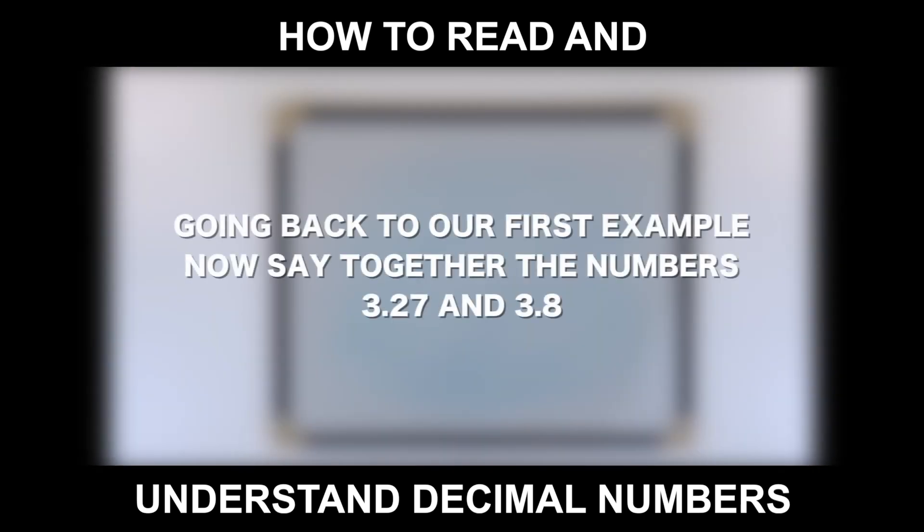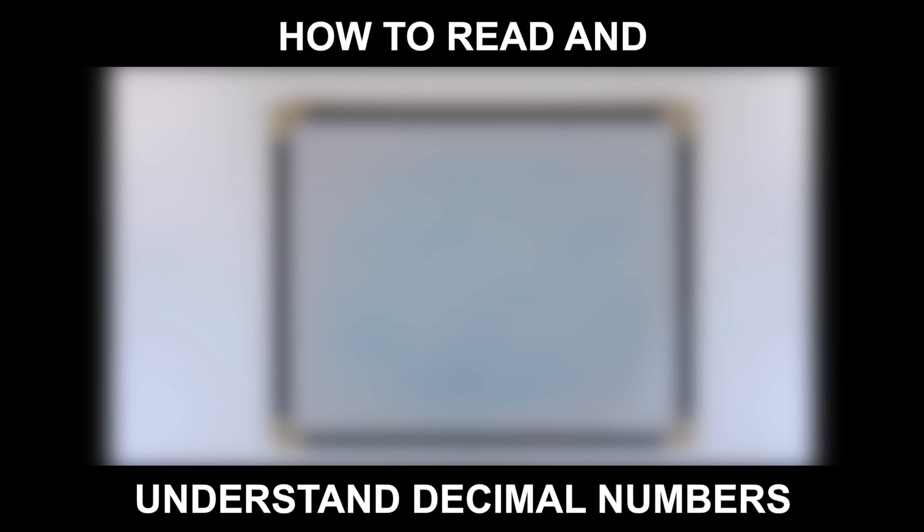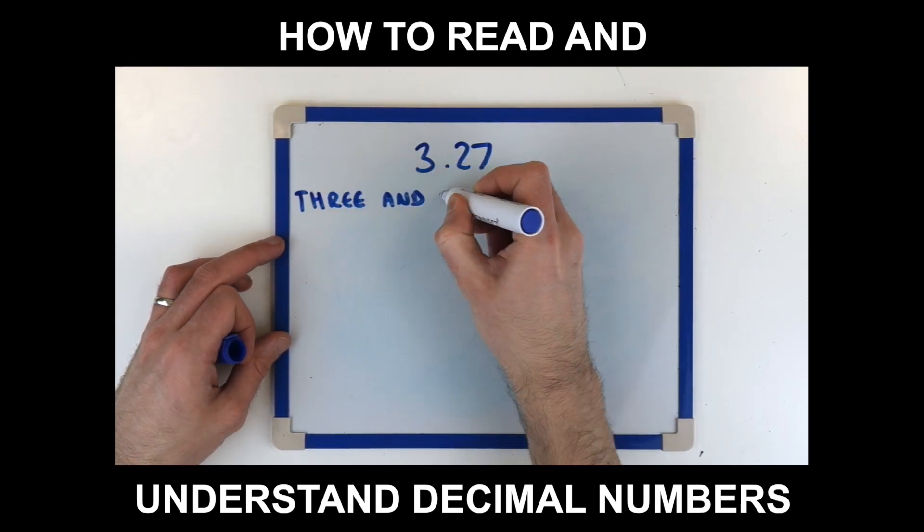Going back to our first example, now say together the numbers 3.27 and 3.8. 3 and 27 hundredths. 3 and 8 tenths.